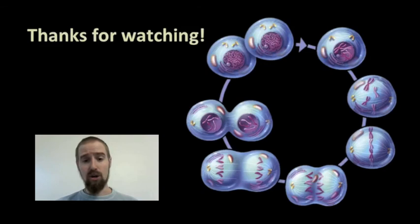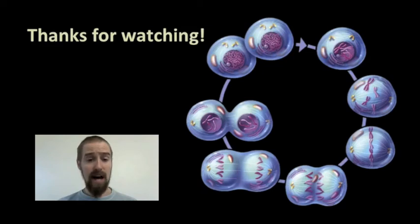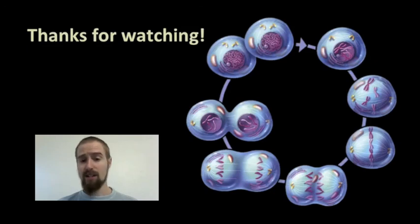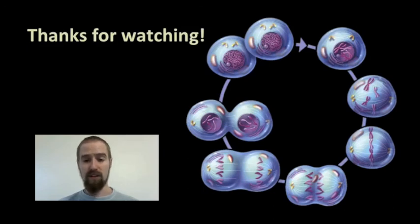Cell division goes wrong occasionally — sometimes horribly wrong — and when it does, it can cause things like cancer or Patau Syndrome. Understanding how these disorders occur is the first step in finding ways to fix them, and lucky for us, it does go right the vast majority of the time. Thanks for watching, and remember, you can go back and watch this video as many times as you need to until you feel like you understand the consequences of cell division gone awry.